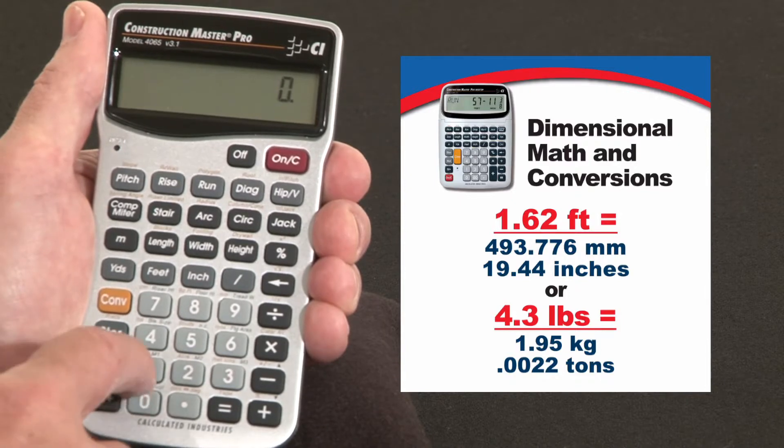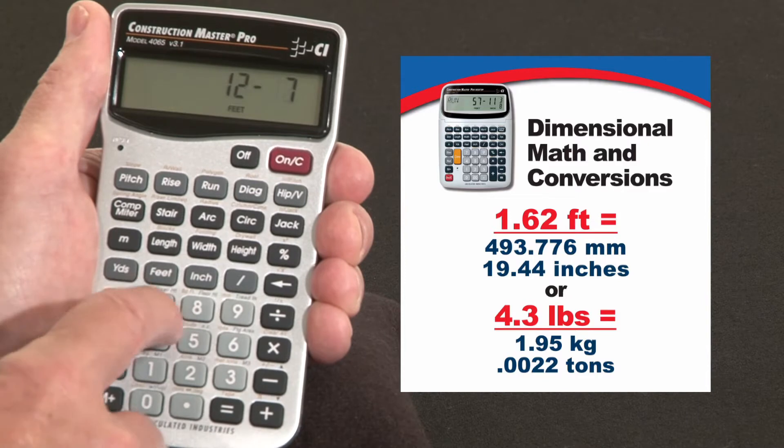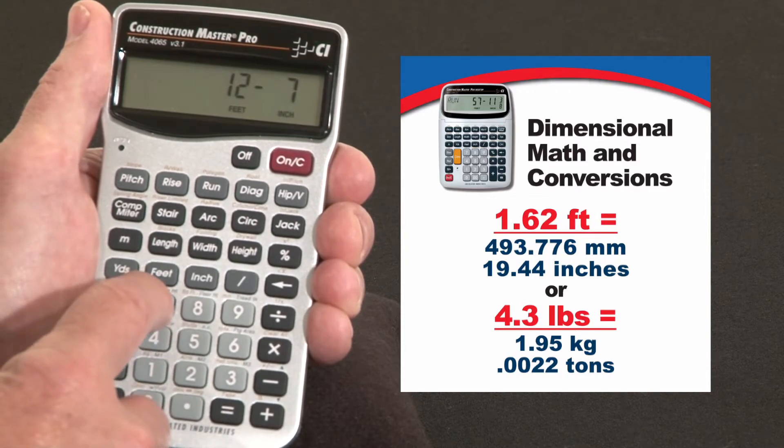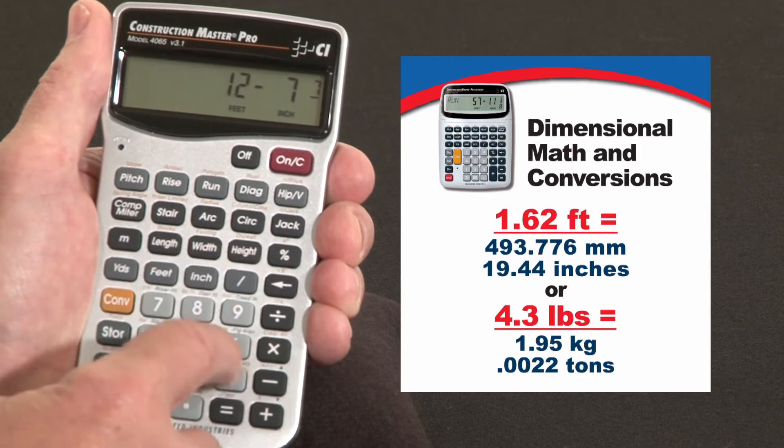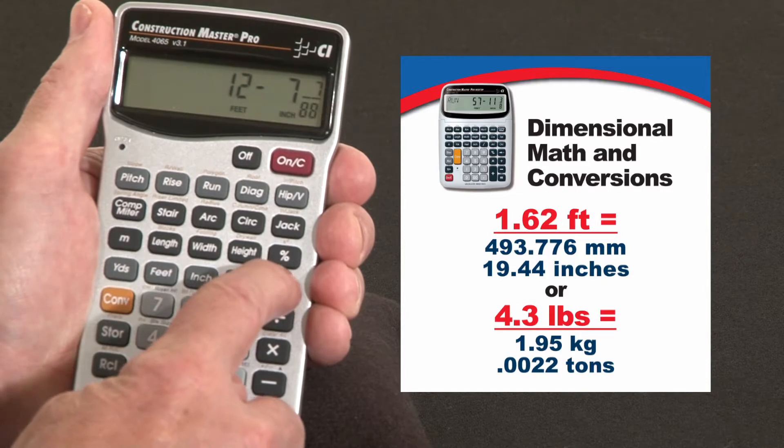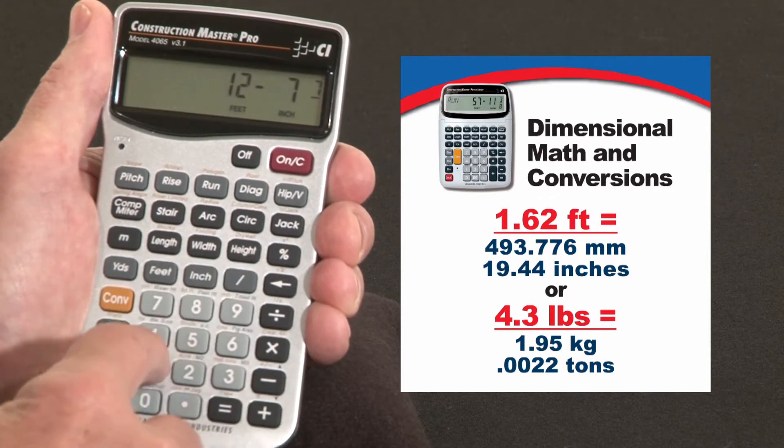Pretty much you put in dimensions the way you say them. Put in fractions down to sixty-fourths of an inch. Just the way you write it, seven slash eights. Now see there I've hit an extra eight. With this little backspace back arrow key you can back digits out one at a time. So let's go back in and say seven sixteenths just for fun.